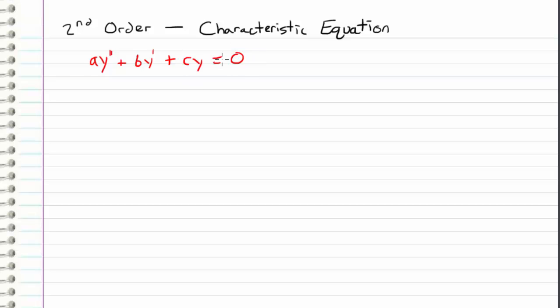So it looks like this: homogeneous because set equal to zero, second order because the highest order of our unknown function is the y double prime, and constant coefficients because we are assuming that a, b, and c are all constants.